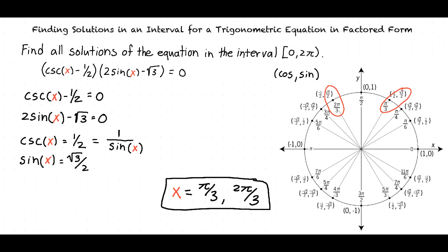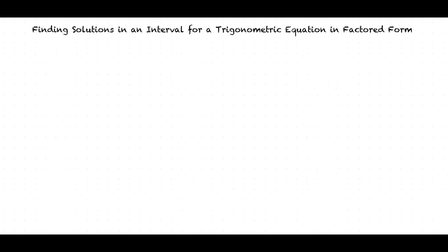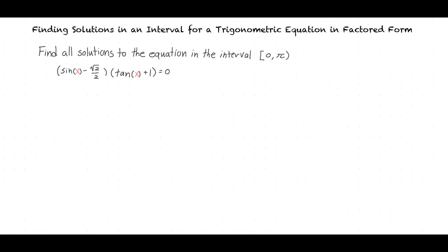Would you like to try the next problem? Sure. Here we have a problem asking us to find all solutions of the equation in the interval 0 to π for the equation: sine x minus square root of 2 over 2, times tangent x plus 1, which equals 0.